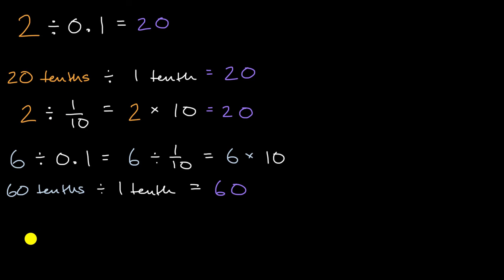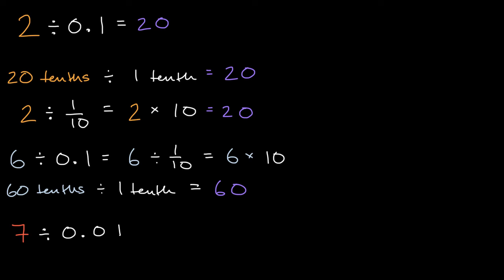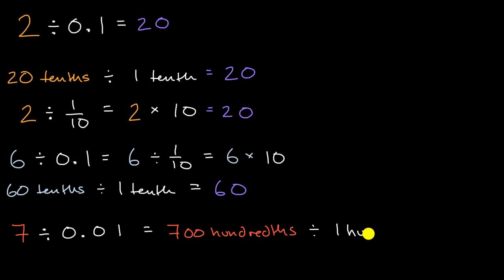Now what about if we dealt with hundredths? Let's figure out what seven divided by a hundredth is. Pause this video and try to figure it out. Well, we could do the same drill. Seven wholes — one whole equals 100 hundredths, so seven wholes equals 700 hundredths. So this equals 700 hundredths divided by one hundredth. If I have 700 of something and divide it into equal groups of one of that something, I'll have 700 equal groups. So this equals 700.